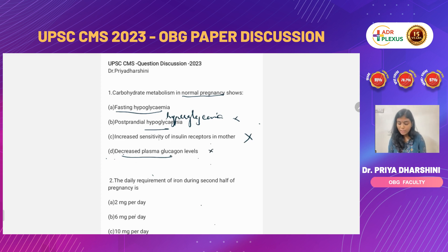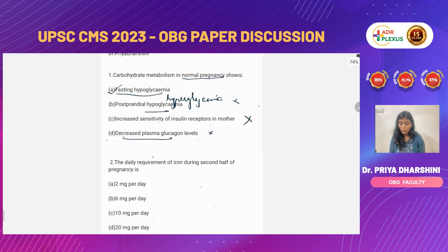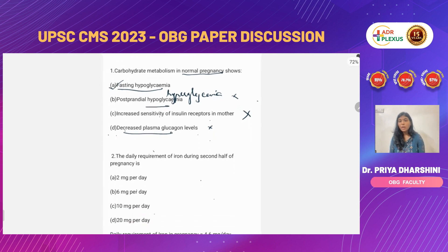The only correct answer here is fasting hypoglycemia. Fasting hypoglycemia is present in normal pregnancy because it is a diabetogenic state.